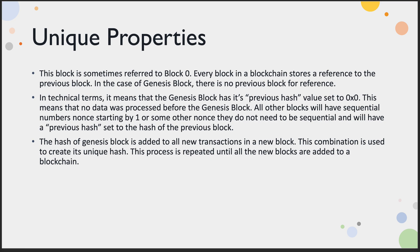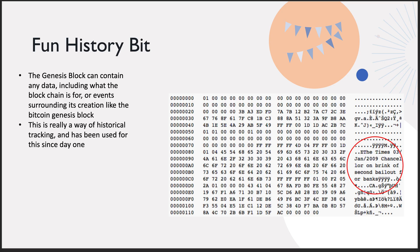The hash of the Genesis block is added to all new transactions in each new block. A combination is used to create this unique hash, and this process is repeated until all new blocks are added to the blockchain. At some point, that blockchain does have an inbuilt limit.